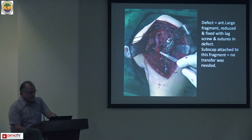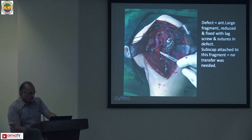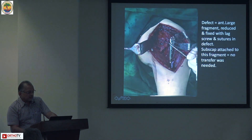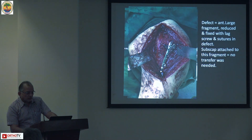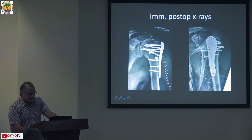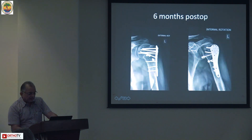After taking a suture through the lesser tuberosity and the subscap, the defect is then repaired. The x-ray immediately post-op shows two screws going anterior to posterior - that is the humeral neck fixed by a plate - and the healing is visible at six months.